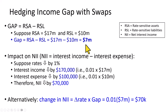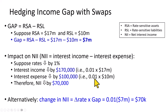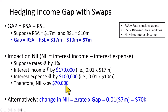The main income measure for banks is net interest income — the difference between interest income and interest expense. If interest rates fall by 1%, the bank's interest income will fall by $170,000, which is 1% of $17 million in assets. Likewise, interest expenses will go down, but by only $100,000 — 1% of $10 million in liabilities. Because interest income dropped by more than expenses, the bank's net interest income drops by $70,000. We can also determine this by multiplying the change in interest rates of 1% by the gap amount of $7 million, giving us $70,000.